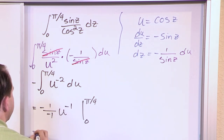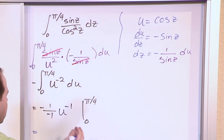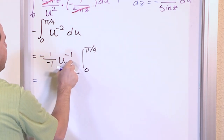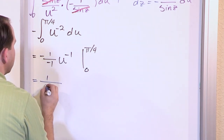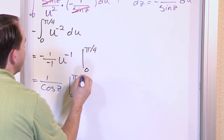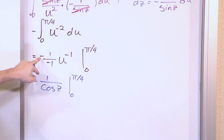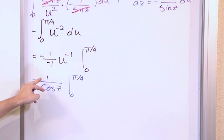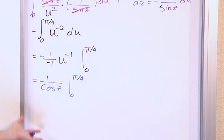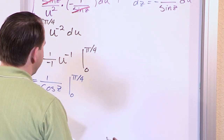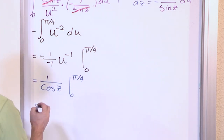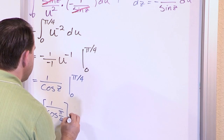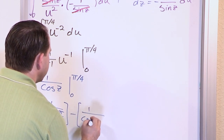After simplification everything becomes positive. Since u equals cosine z, u to the negative 1 becomes 1 over cosine z. So we evaluate 1 over cosine z from 0 to pi over 4.